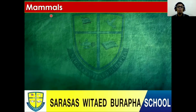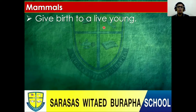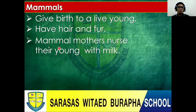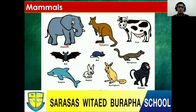First, we have mammals. What are the characteristics of mammals? They give birth to live young — they can have babies. They have hair and fur. Mammal mothers nurse their young with milk. And they are warm-blooded. Let's see some examples of mammals: elephant, kangaroo, cow, bat.